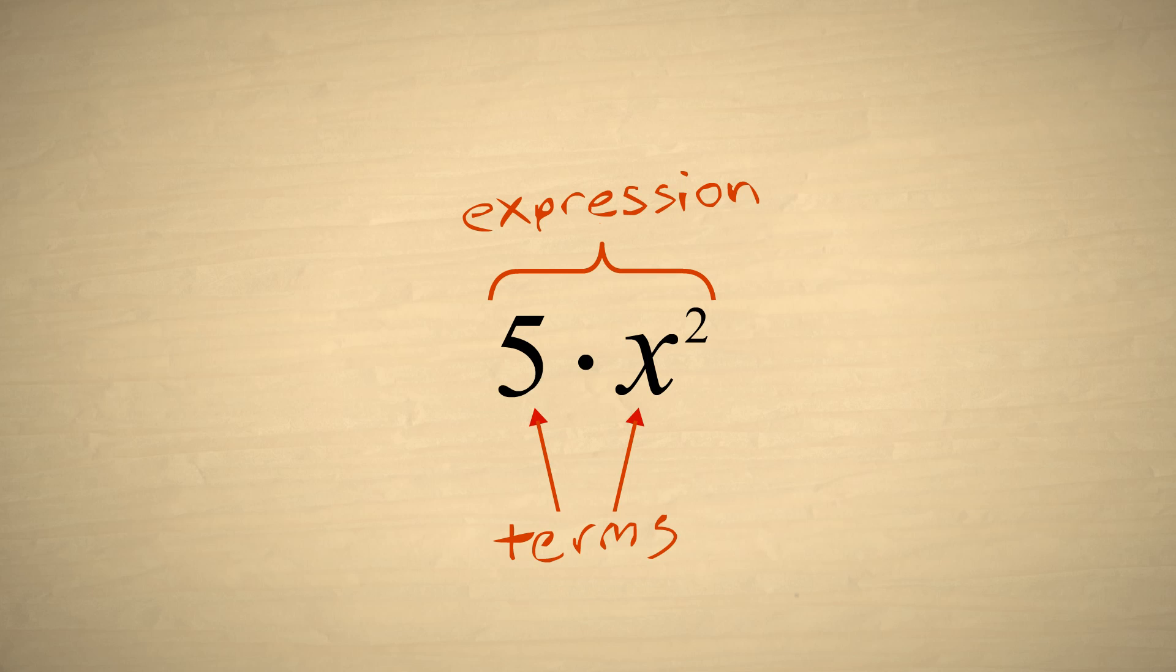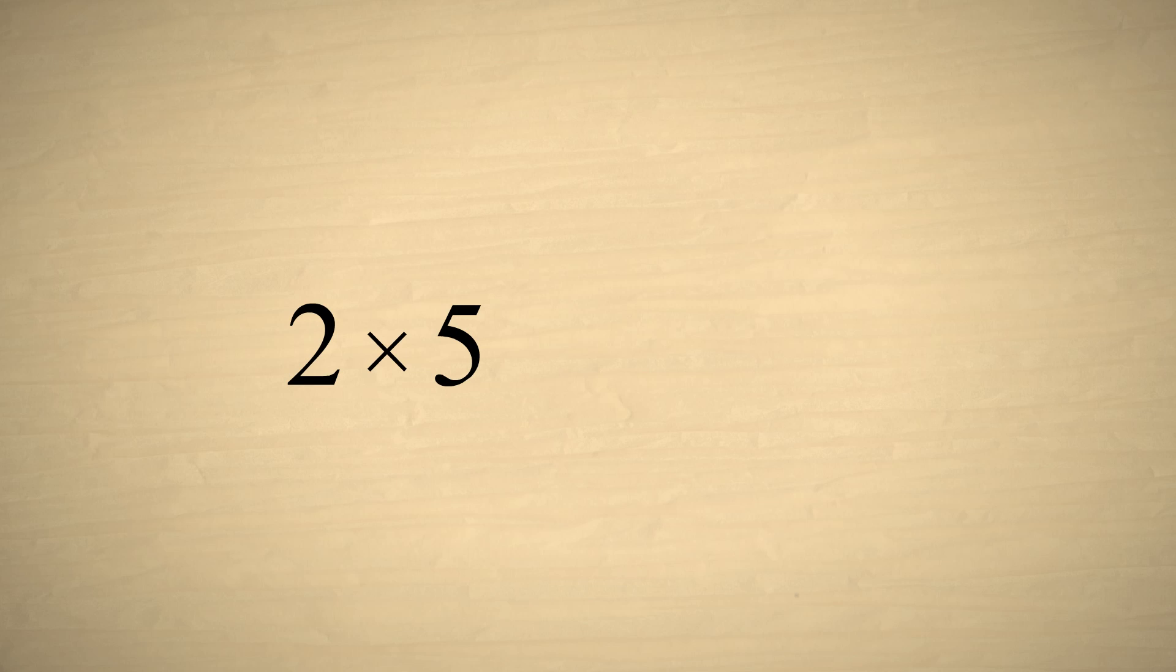There are several ways to write products of terms. As we saw earlier, when multiplying numbers we can use either the standard multiplication symbol or a dot. In our lectures, we will typically use a dot to indicate multiplication so that it will not be confused with the letter x.